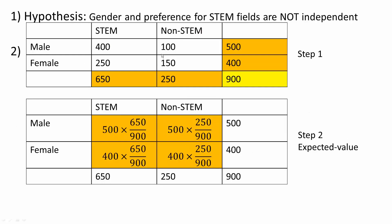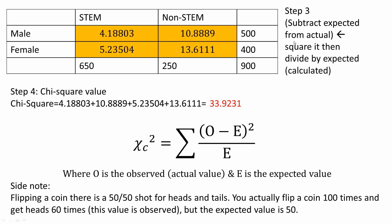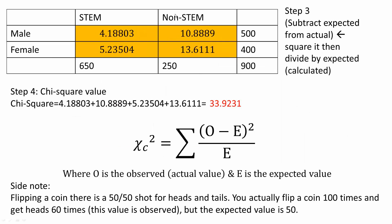For males non-STEM: 100 minus expected, squared, divided by expected. For females STEM: 250 minus expected, squared, divided by expected. For females non-STEM: 150 minus expected, squared, divided by expected. After calculating all four values and summing them, we get the chi-square value of 33.9231. The general formula for chi-square is the summation of (O minus E) squared divided by E — which is exactly what we did here.